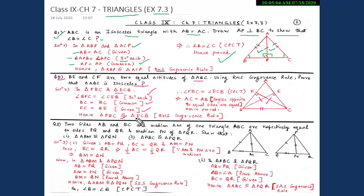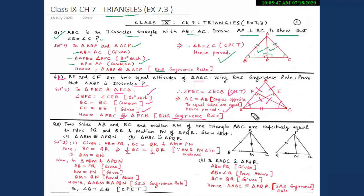Triangle FBC is congruent to triangle ECB by the Right Hand Side congruency criteria. Since these two triangles are congruent, by CPCT, angle FBC equals angle ECB. The side opposite angle FBC is AC and the side opposite angle ECB is AB. So AC equals AB, since sides opposite to equal angles are equal. Therefore triangle ABC is an isosceles triangle.